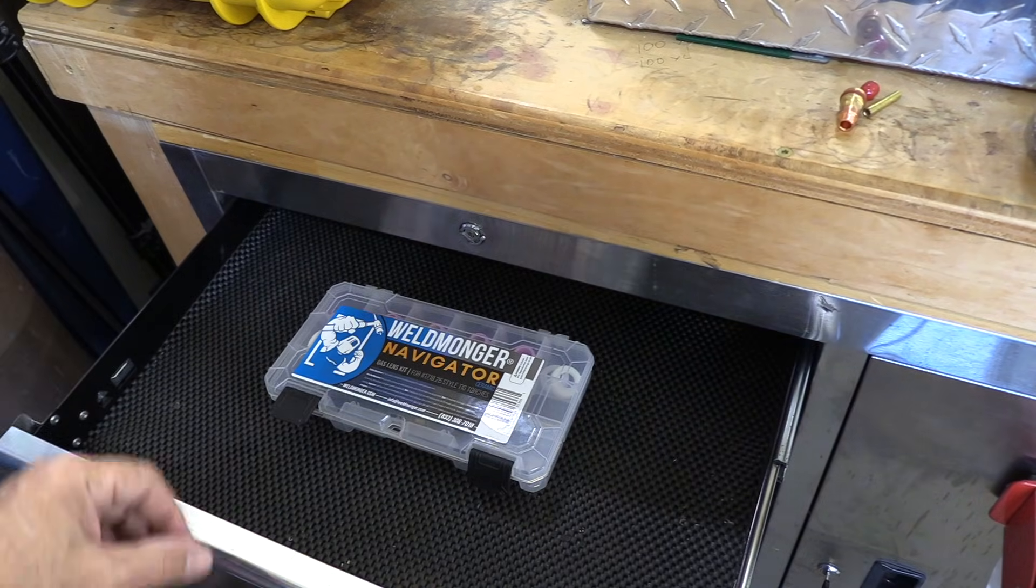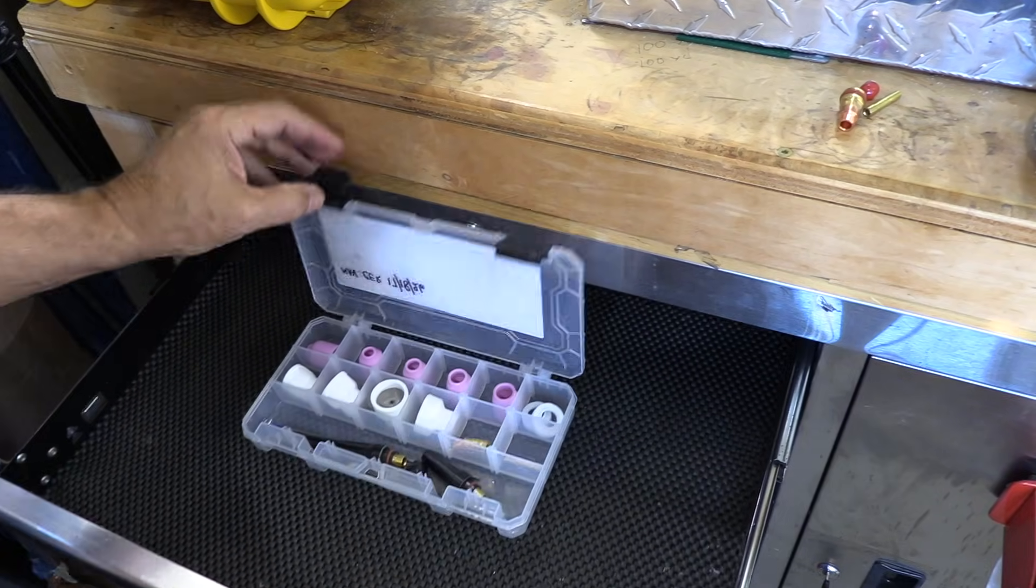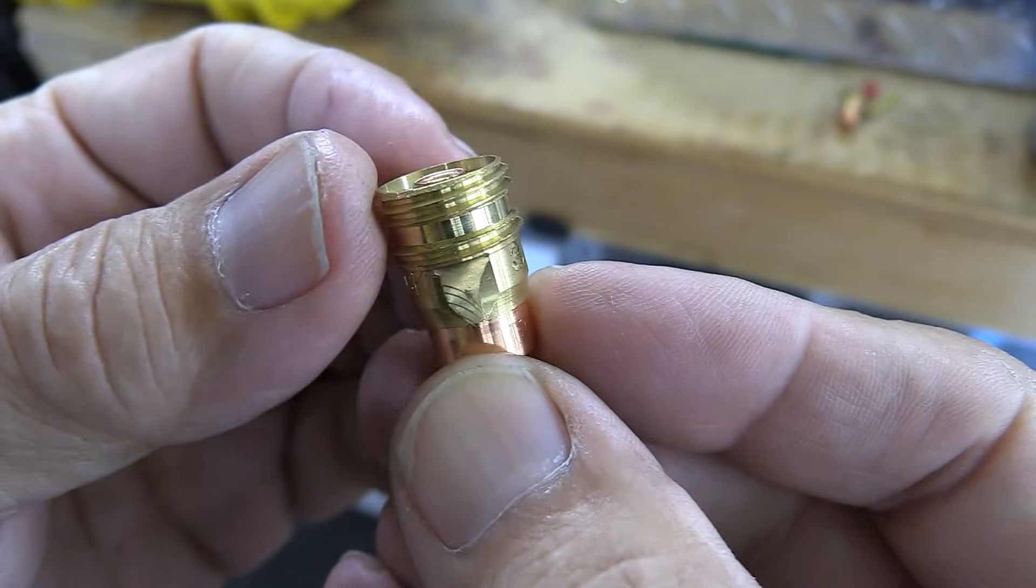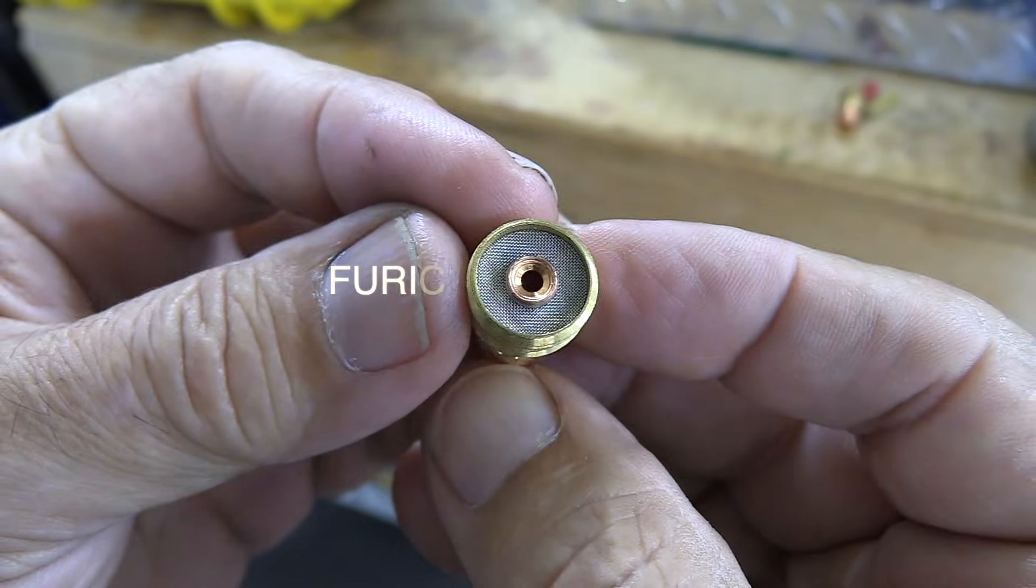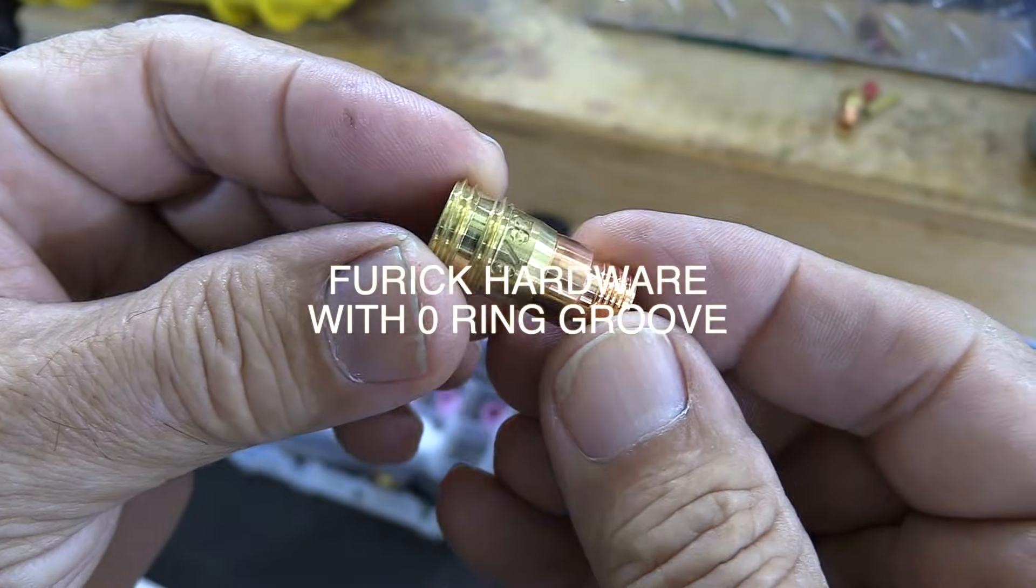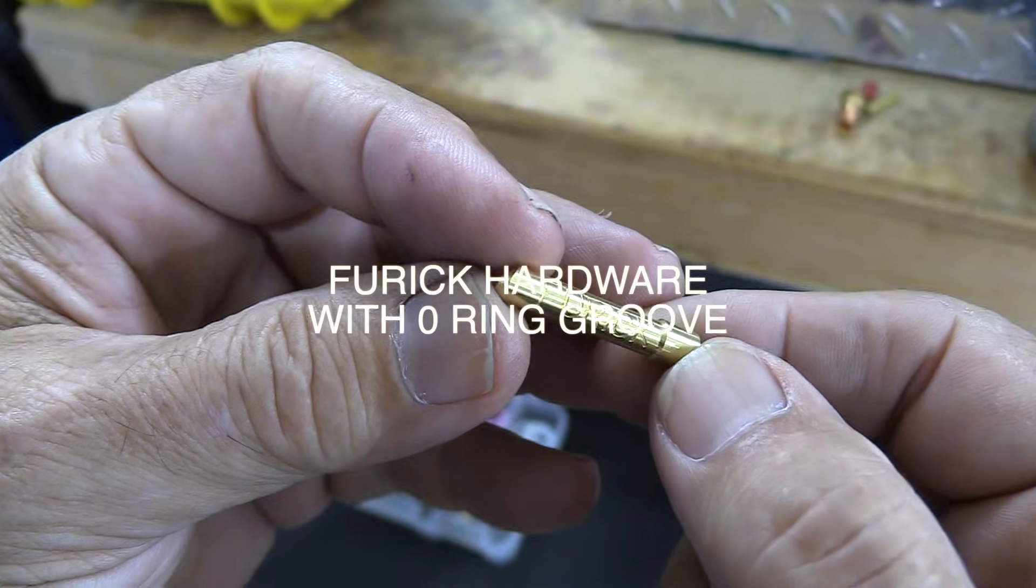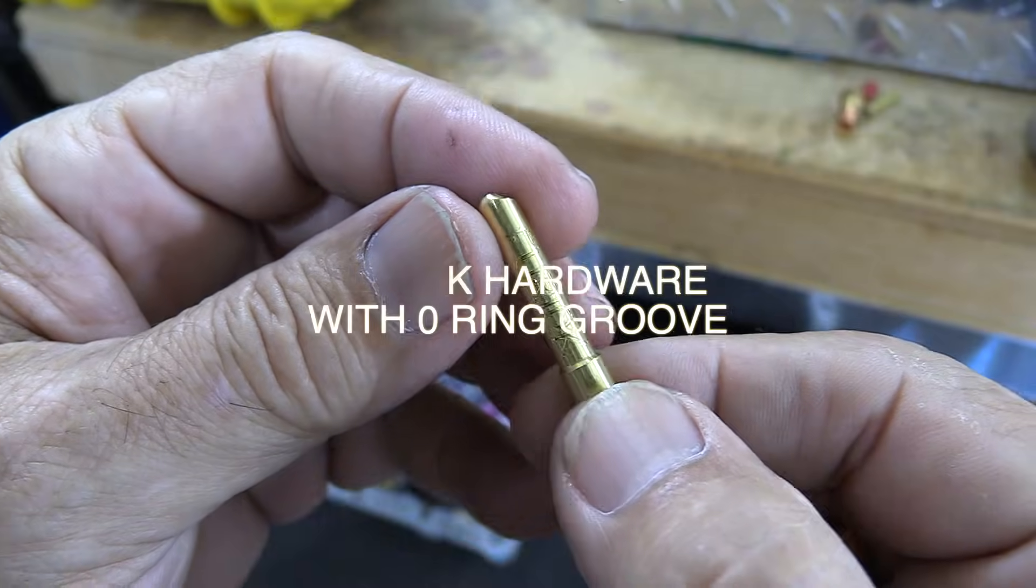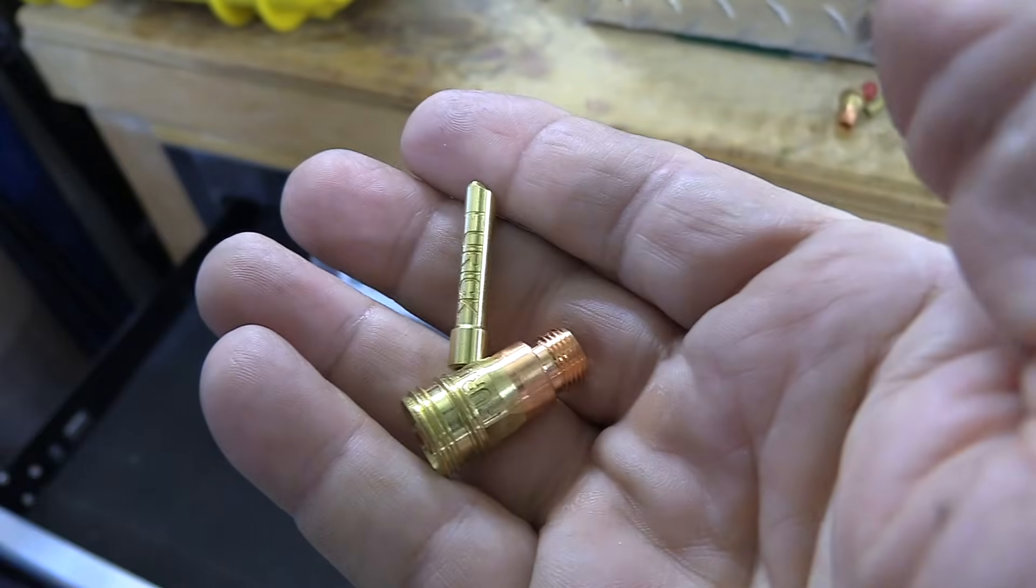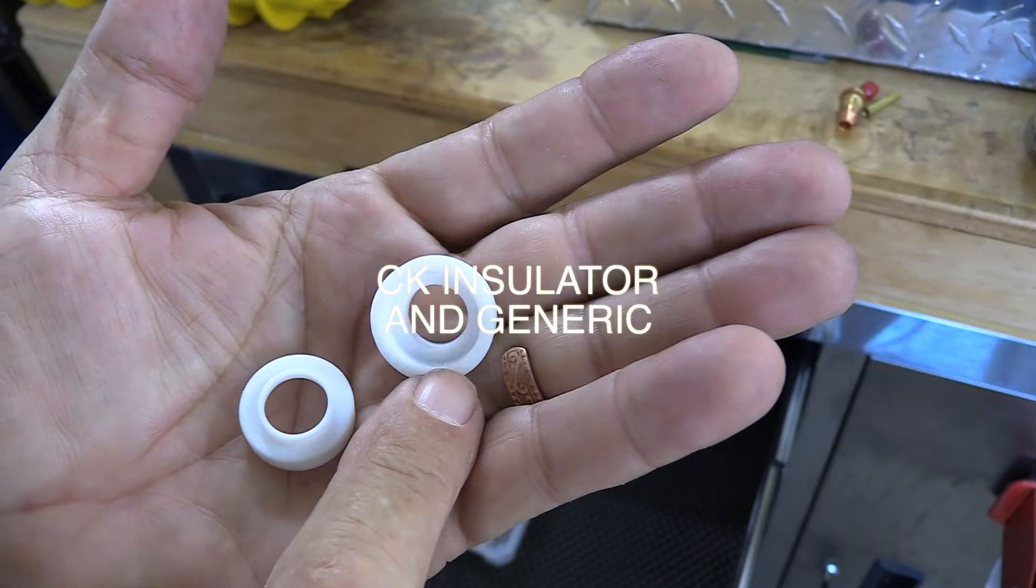Pulse settings really help limit heat input and therefore limit discoloration. But something that really helps with discoloration is using a larger cup with a gas lens. So I'm going to be using a Furik Ceramic 12 today that comes with this Navigator ceramic version kit with a 17 style torch.